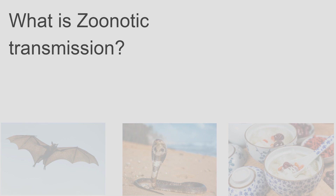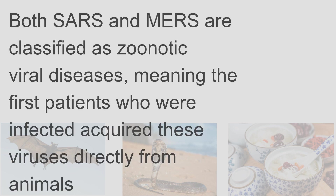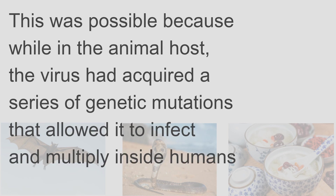What is zoonotic transmission? Both SARS and MERS are classified as zoonotic viral diseases, meaning the first patients who were infected acquired these viruses directly from animals. This was possible because, while in the animal host, the virus had acquired a series of genetic mutations that allowed it to infect and multiply inside humans.